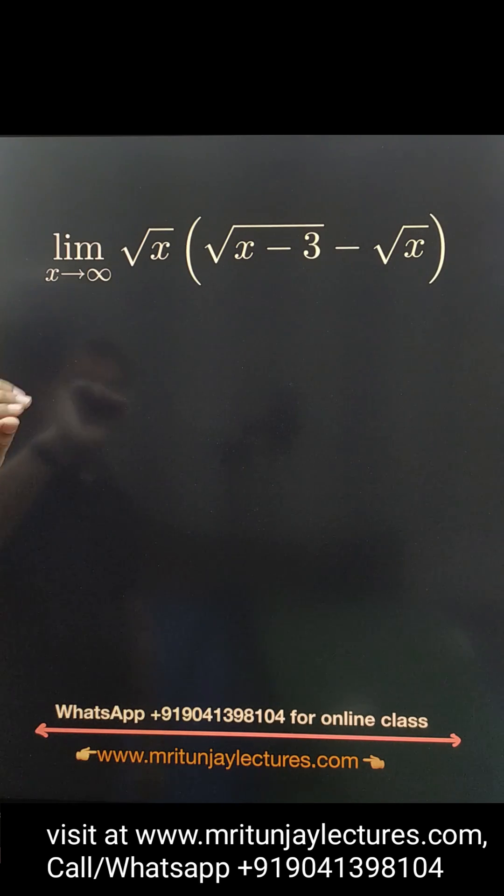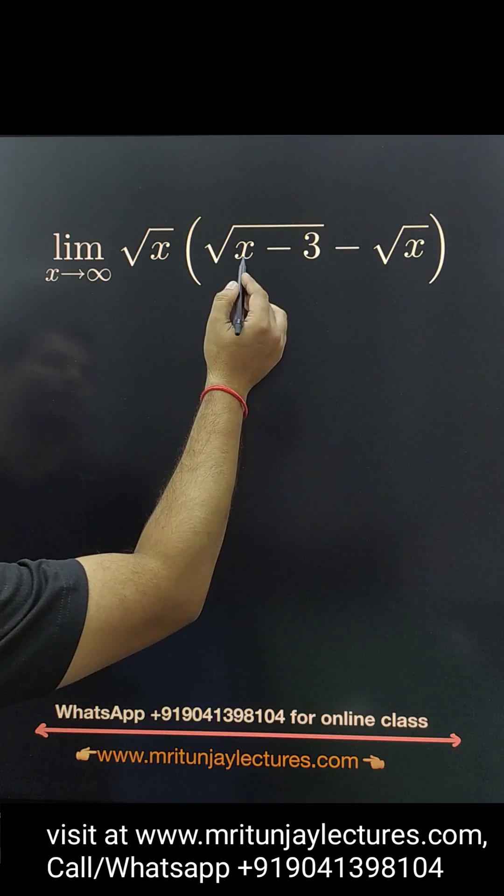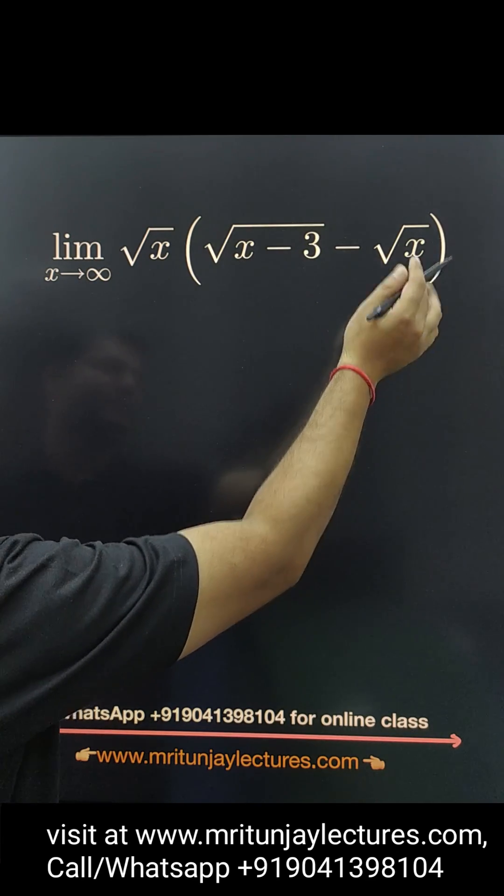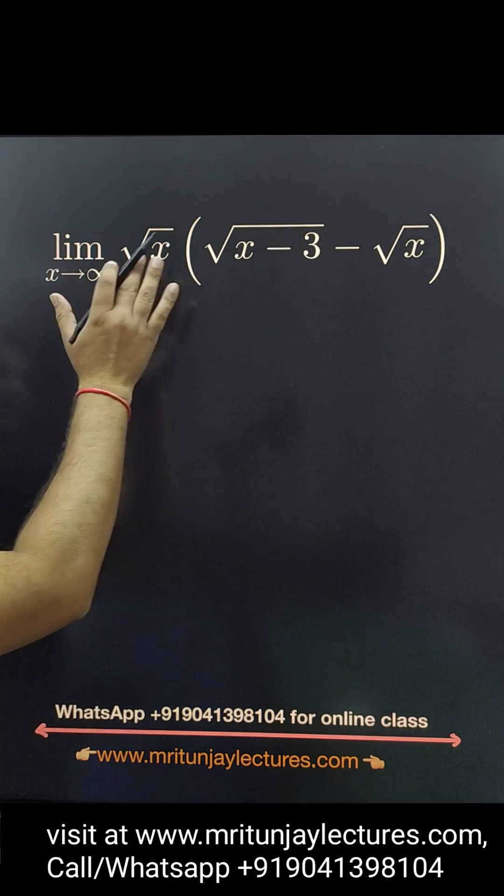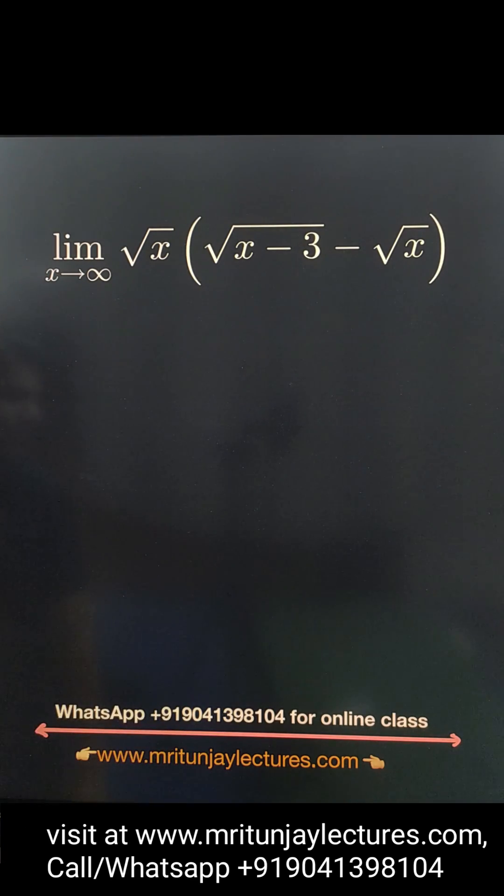If you see very carefully, if we put x tends to infinity, then we got how much? Infinity times, that is infinity minus infinity, which is indeterminate form. So basically this is indeterminate form. So first of all, this one is making an indeterminate form.